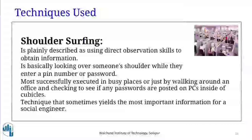The next technique is shoulder surfing, described as using direct observation skills to obtain information. It involves looking over someone's shoulder while they enter a PIN or password. It is most successfully executed in busy places or by walking around an office and checking if any passwords are posted on PCs inside cubicles. This technique sometimes yields the most important information for a social engineer.